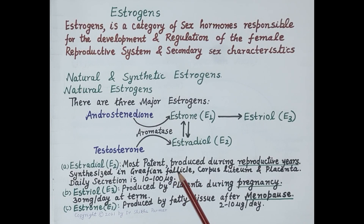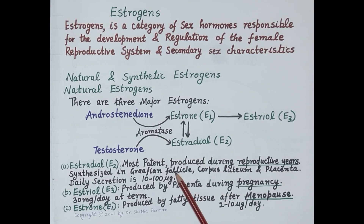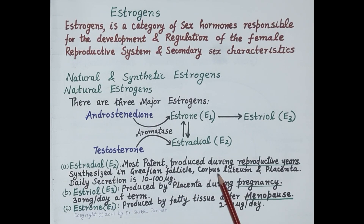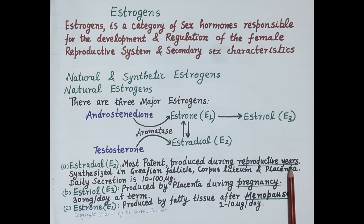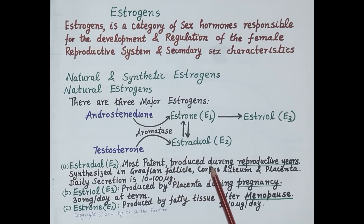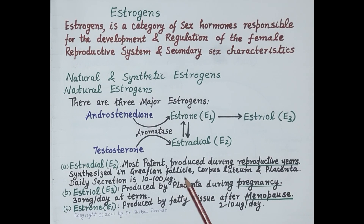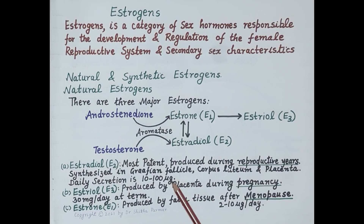Graafian follicles are present in the ovaries, and a developing Graafian follicle produces estrogen. When fully mature, this Graafian follicle ruptures to release the egg. The ruptured follicle is called the corpus luteum. So the Graafian follicle, corpus luteum, and placenta all produce estradiol. Estradiol is the most potent of all estrogens and it is produced throughout the reproductive years of a woman.